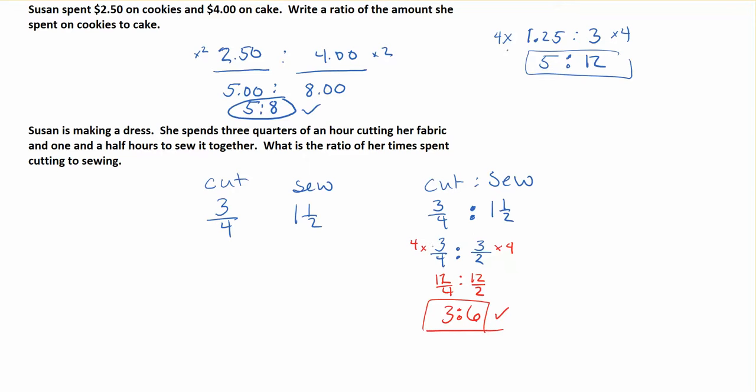I looked at the bottom and I'm looking for the lowest common multiple that both of these have. If I times both sides by four, I'll get 12 on top for the right-hand side, and 12 divided by four will get me to three. If I times the left-hand side also by four, I'll get 12 on top and divide by two, you get to six. So 3:6, cut to sew time.